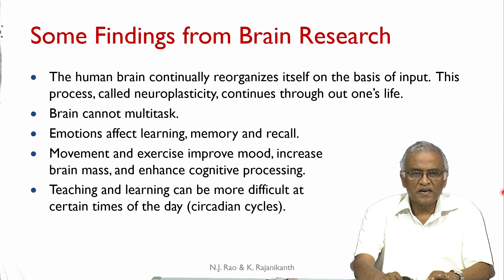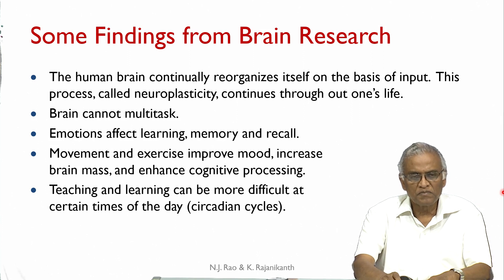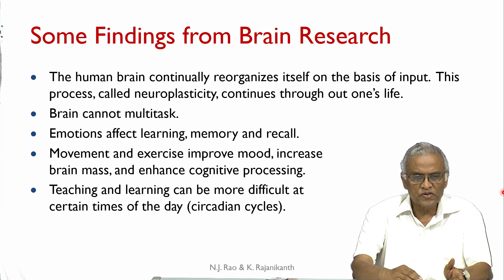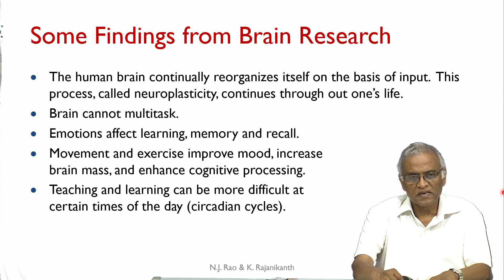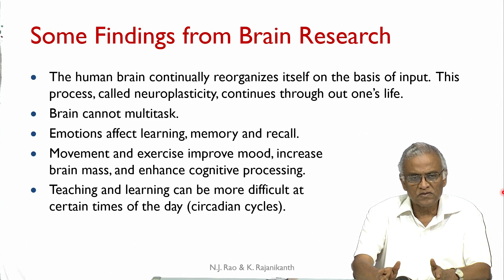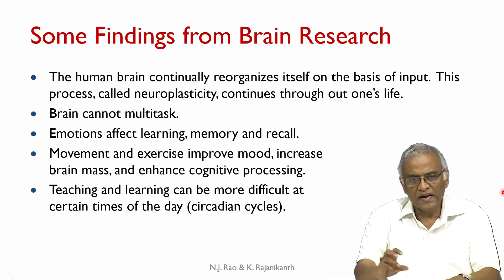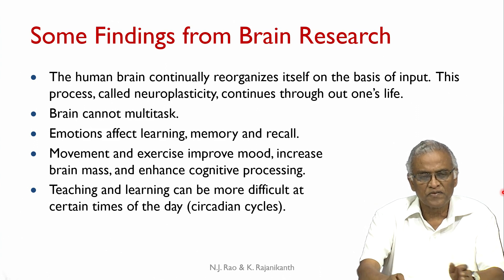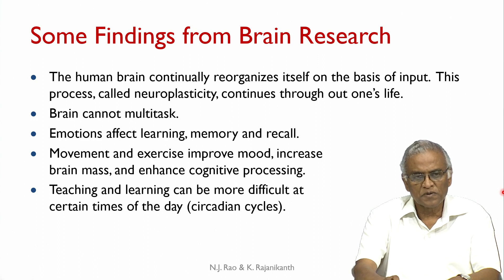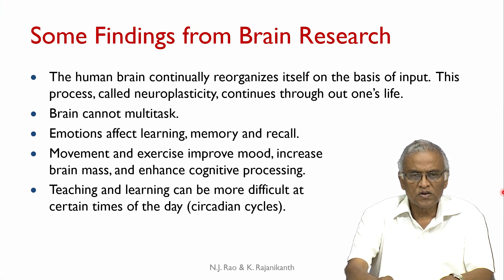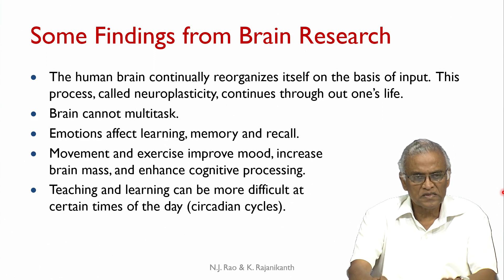In spite of its great complexity, the brain cannot perform two cognitive activities at the same time. Though one may switch from one cognitive task to another — many youngsters feel they can multitask — but the brain is not designed to do two tasks at the same time. What is actually happening is we are switching between two tasks continuously: you stop one, address the other, stop that and address the previous one, which actually turns out to be very inefficient.